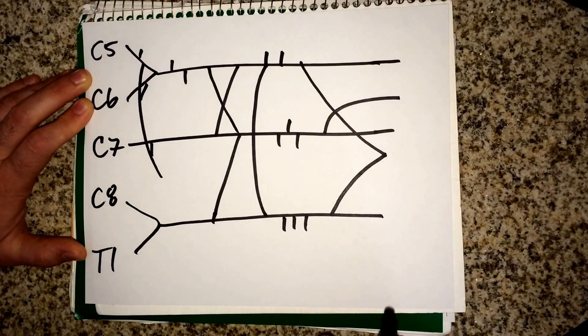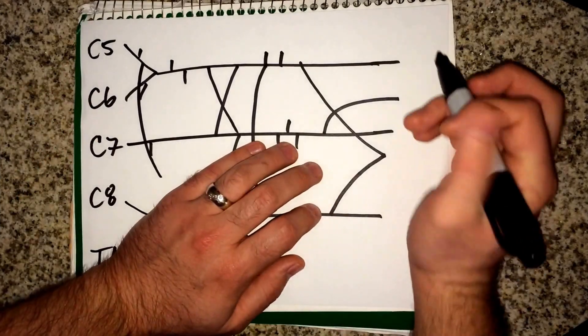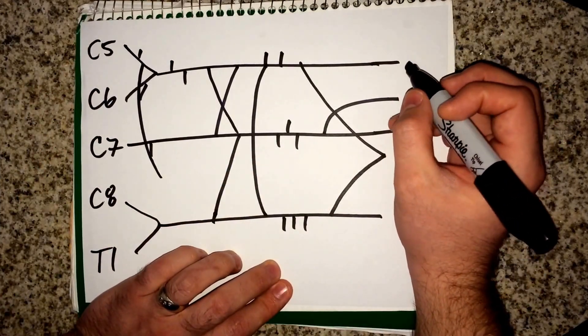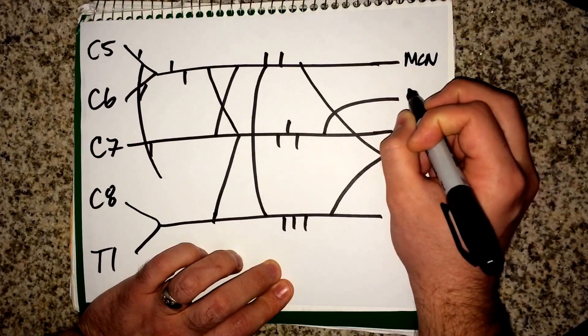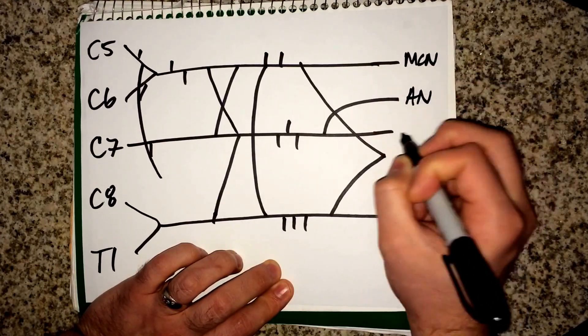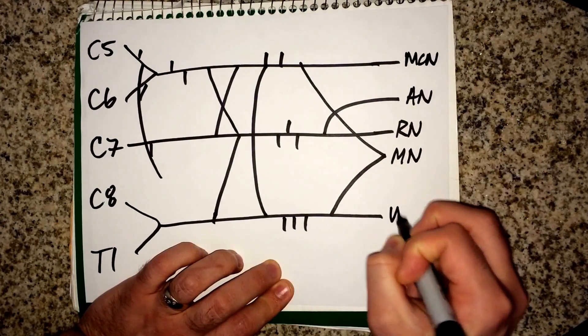Let's go ahead and label it though. So over here you have the really important branches you want to remember for this plexus. So you have your musculocutaneous nerve, you have your axillary nerve, your radial nerve, your median nerve, and your ulnar nerve.